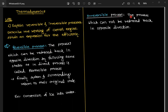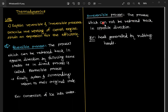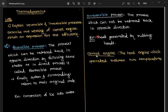The process which cannot be retraced back in the opposite direction is called an irreversible process. One example is heat generated by rubbing hands. When we rub our hands, heat is generated, but by generating heat we cannot rub the hands back — that is what an irreversible process is.